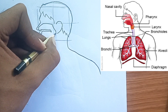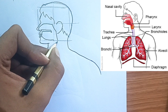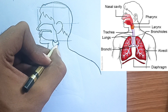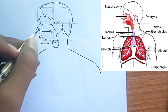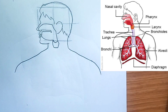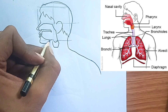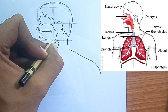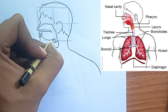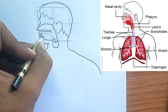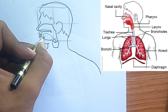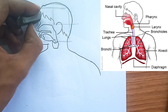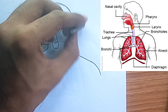Bronchioles: The tiniest bronchioles eventually lead to tiny air sacs called alveoli. Alveoli: These are the workhorses of the respiratory system. The alveoli are surrounded by a dense network of tiny blood vessels called capillaries. It's here that the crucial gas exchange takes place. Oxygen from the inhaled air diffuses across the thin walls of the alveoli into the blood in the capillaries. At the same time, carbon dioxide from the blood diffuses into the alveoli to be exhaled.